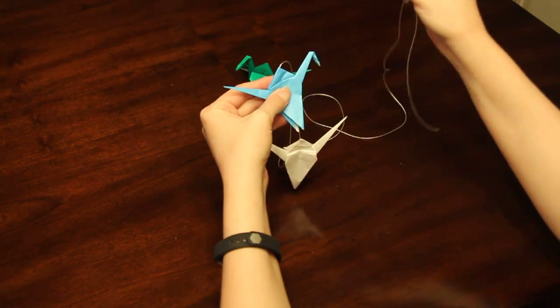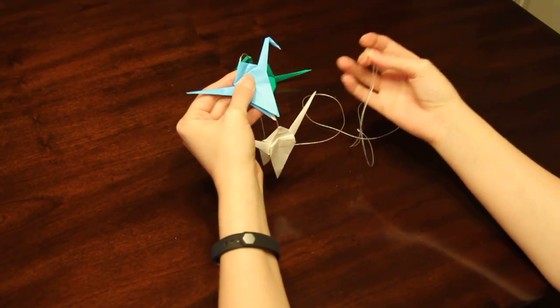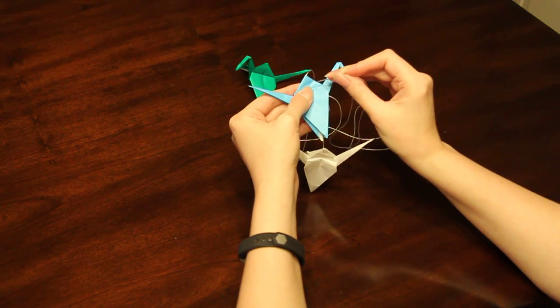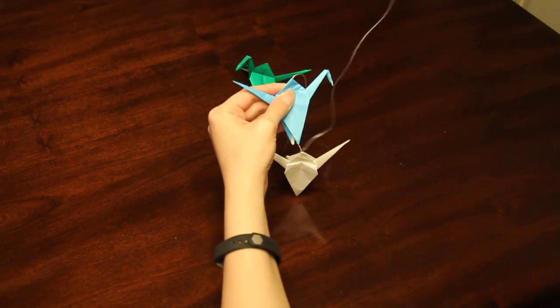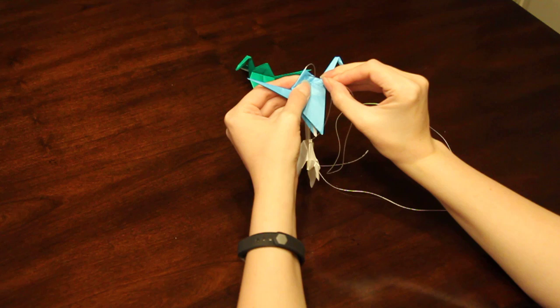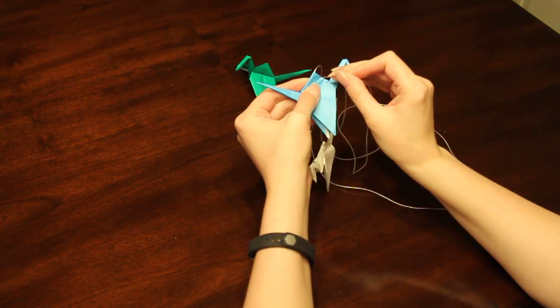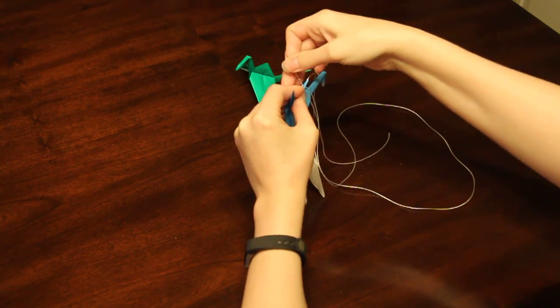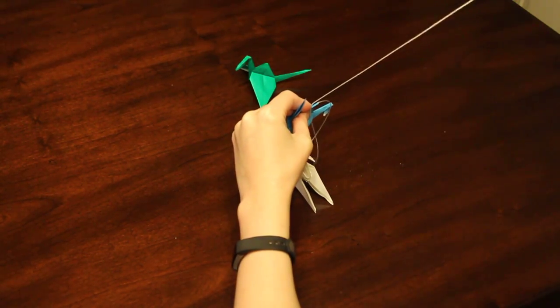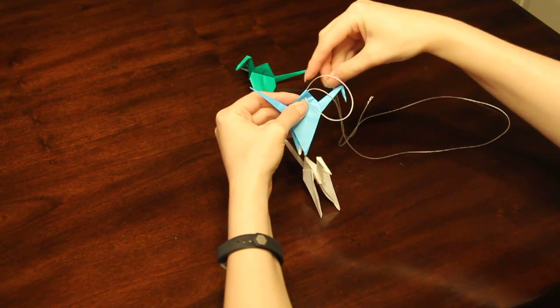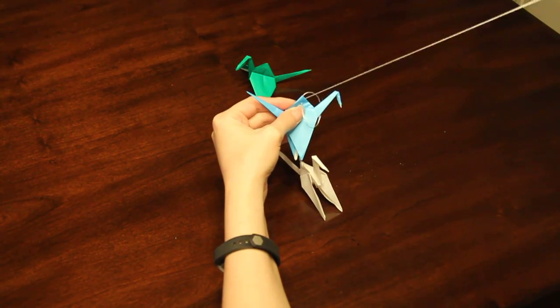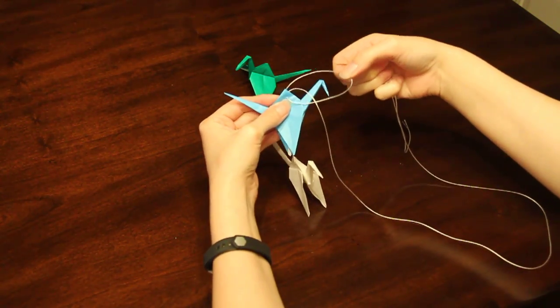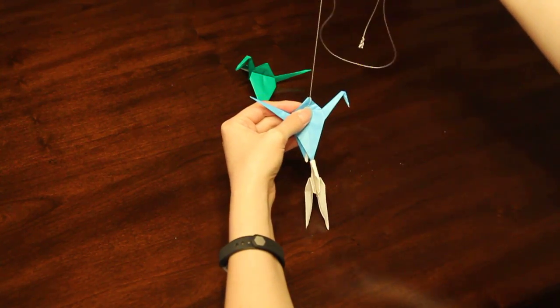The way that I've cut the string, you should be able to fit 9 to 12 cranes on a string if you space them about like that. Again, I'm sticking the needle back through, loop it through, and make sure you don't get it caught on the neck and tail, just like that.